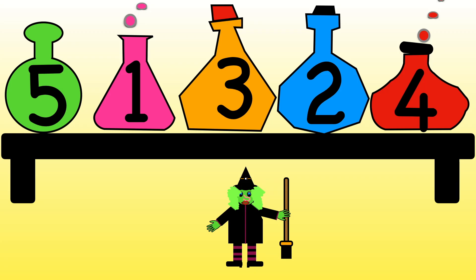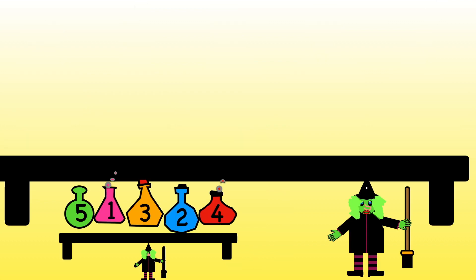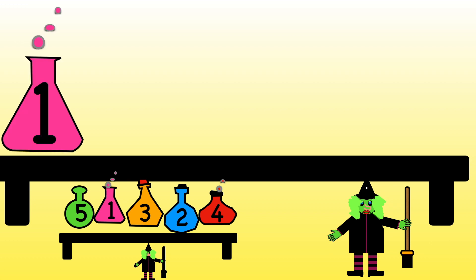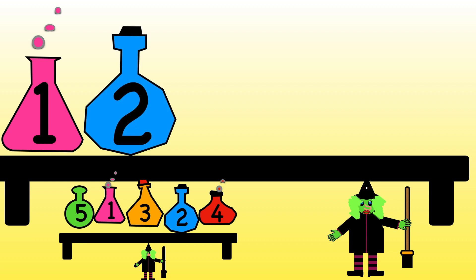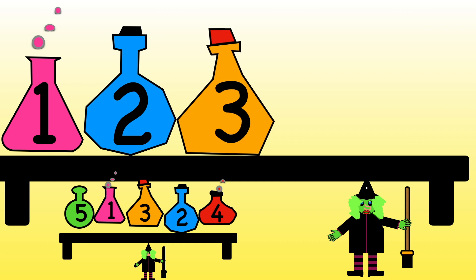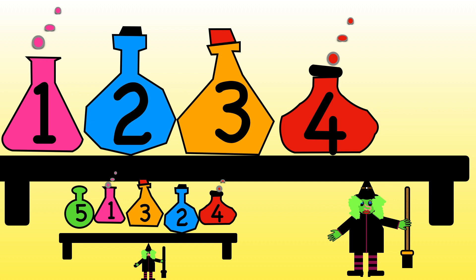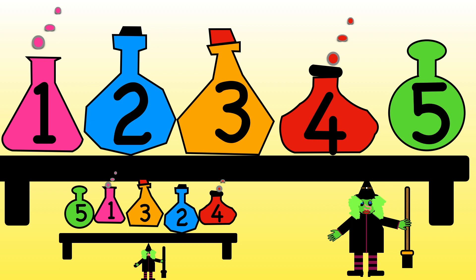The witch has muddled up her potions. Can you put them back in the right order for her? Which colour potion should go first? Which one comes next? Which one comes next? Which one comes after that? Which one is fourth? And which one should come last? Well done. We've now finished working with numbers to five. Remember to subscribe to my channel to get information about my other videos. Bye!